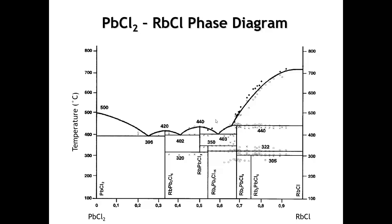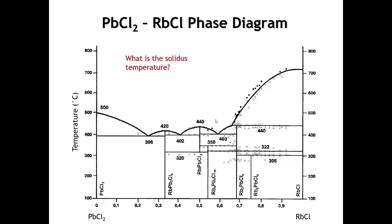Let's finish this section on binary phase diagrams by looking at a real phase diagram. I'm going to ask you different questions about interpreting this phase diagram. My first question: in this phase diagram between lead chloride and rubidium chloride, what is the solidus temperature? Remember that the solidus temperature is the temperature below which there are no liquid phases present. On this phase diagram, we can see that these lines represent the points below which a liquid phase is not present, and the lowest of them is 396°C. So the solidus temperature of this phase diagram is 396°C.